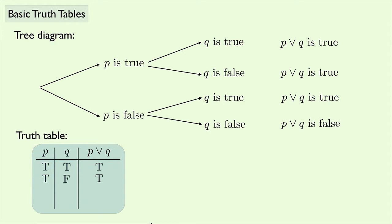And you can see that we're going to get true for every situation except for when both P and Q are false. When P and Q are both false, P or Q is false. So this is the truth table for the disjunction.